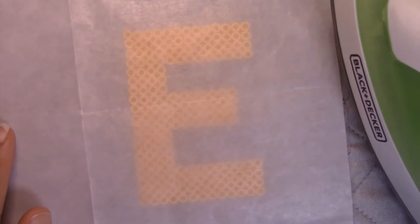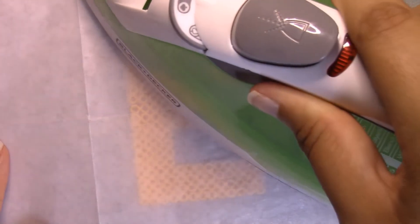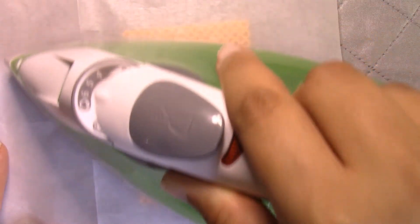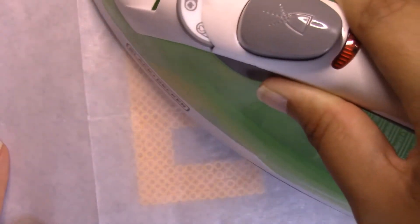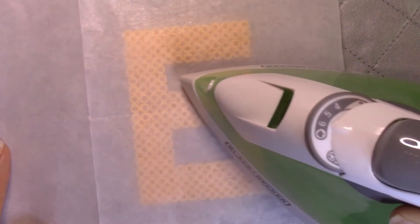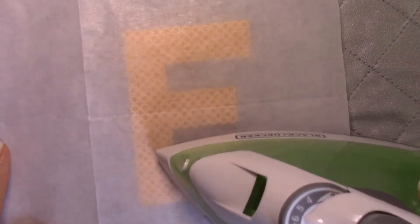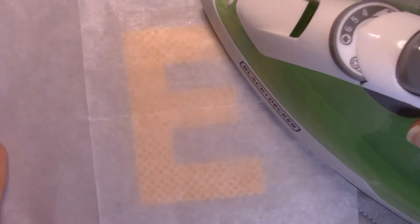So I have the parchment paper there and I'm just going to place my iron on and work in a circular motion. Make sure that as you're working you get the corners and the edges because those sometimes take a little bit longer to fuse together. And then you'll be able to check it by just moving your parchment paper.